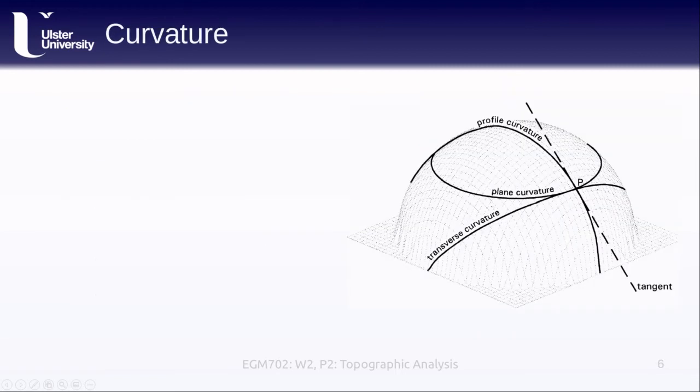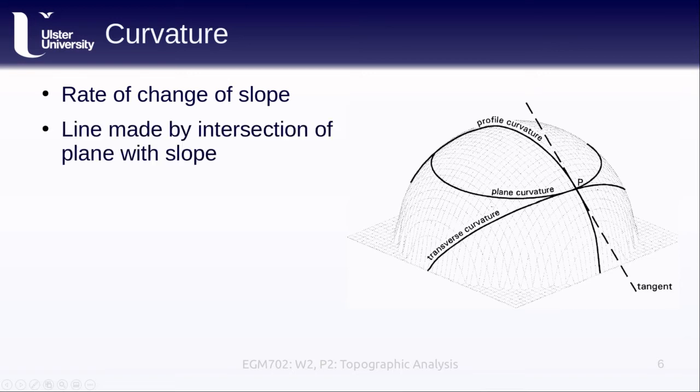The second derivative of the surface is something called curvature, and this is the rate of change of the slope. This is also a line that is made by intersecting some plane. We can have a plane that is horizontal to the surface, vertical to the surface, intersects the surface at some angle, and also that is tangent to the surface.